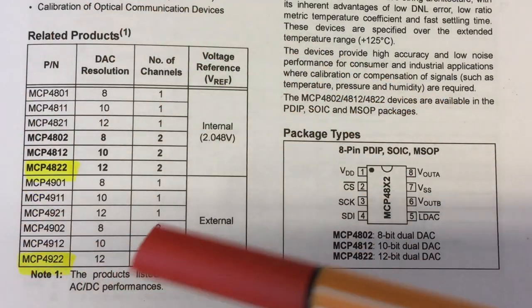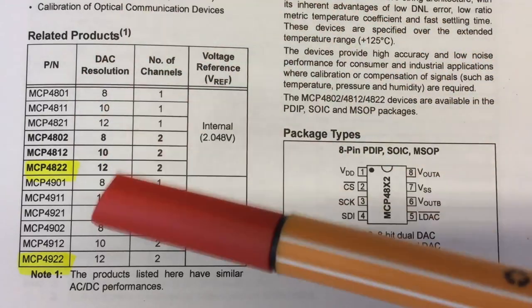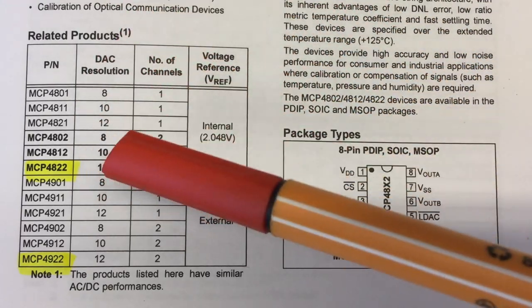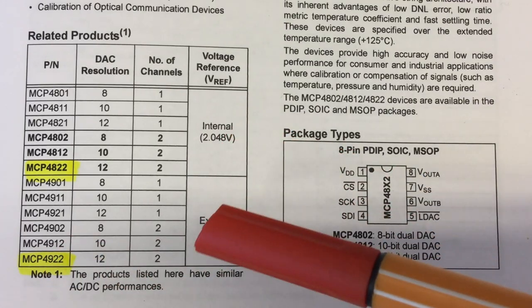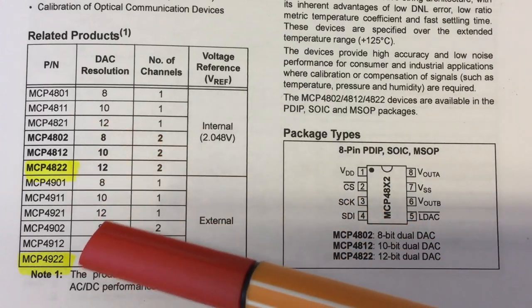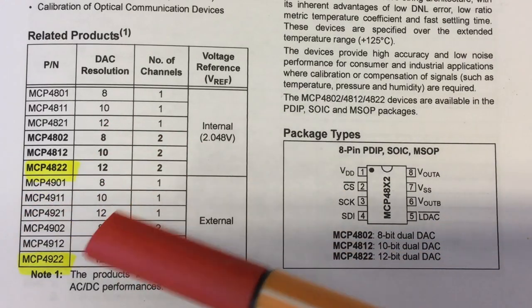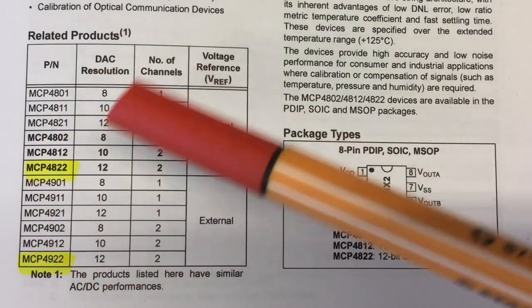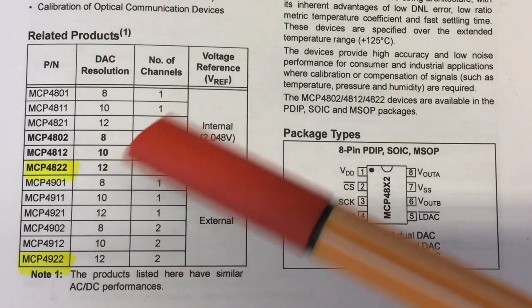And because these chips are all very similar, as soon as you know how to use one chip with internal voltage reference and one with external voltage reference, and I will use these two as examples, you can basically or you know basically how to use any other chip from this family. That's a really neat feature.